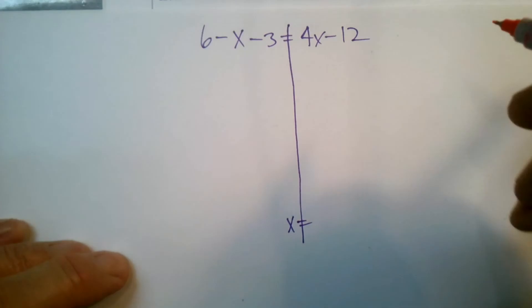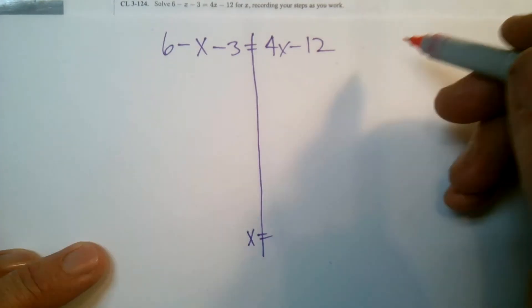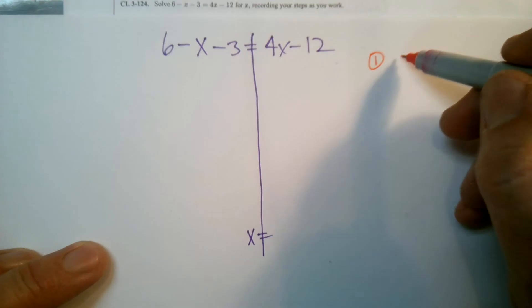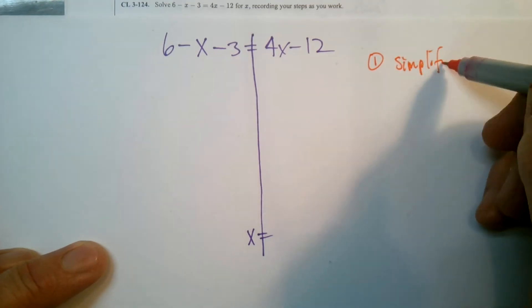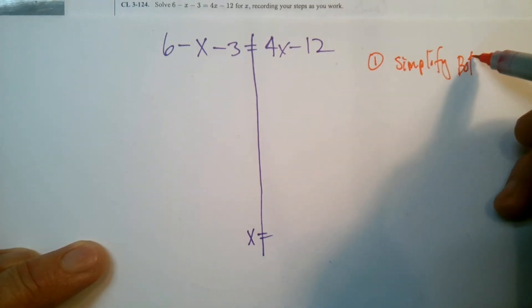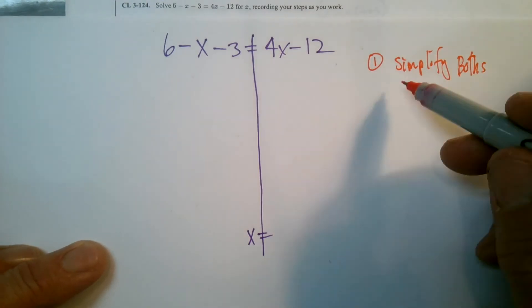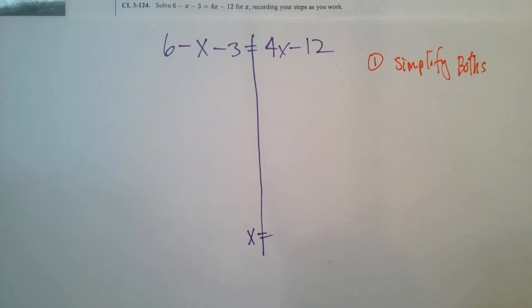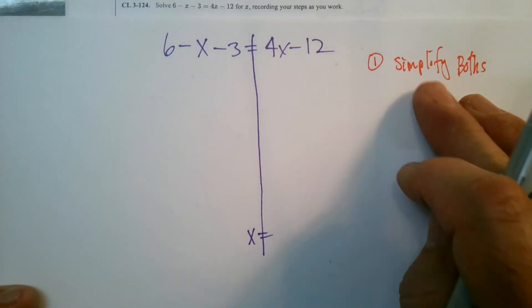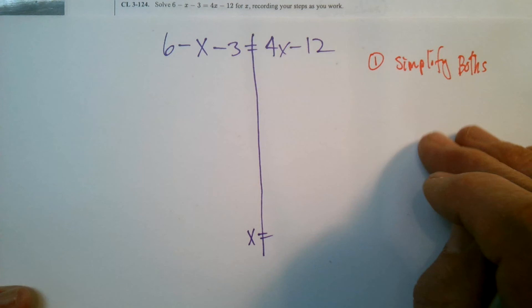I always tend to have three quick steps. The first step really is to simplify both sides. What that involves is combining like terms, distributive property, order of operations, those kinds of things to where you're down to nothing can be combined. It's simplified as much as possible.